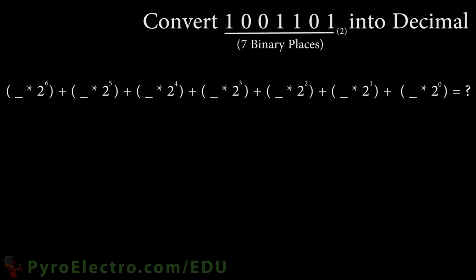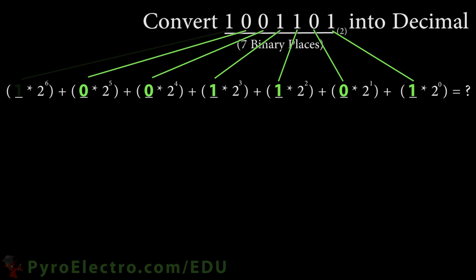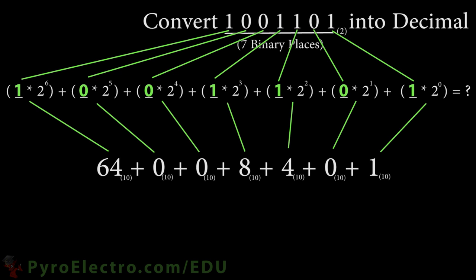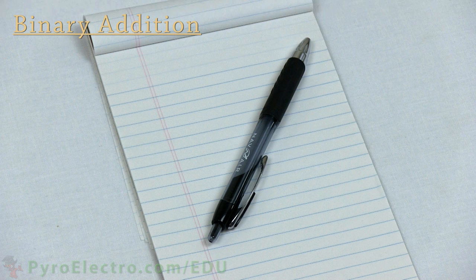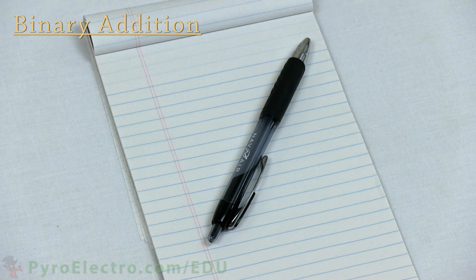Then, we spread out the binary number and multiply each number by 2 to the exponent of its place, all in order. The calculation might take a moment, but it will come out to 64 plus 8 plus 4 plus 1, which is 77.